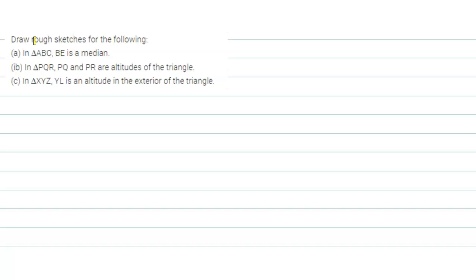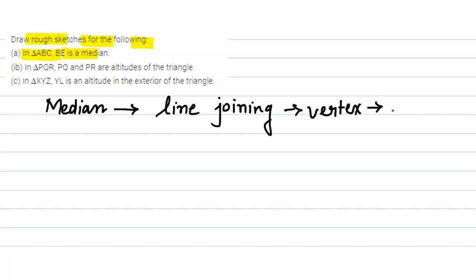Hello everyone, the question says to draw rough sketches of the following. In part A, we have to draw a triangle ABC where BE is a median. So what is a median? It is a line joining the vertex of a triangle to the midpoint of the opposite side.